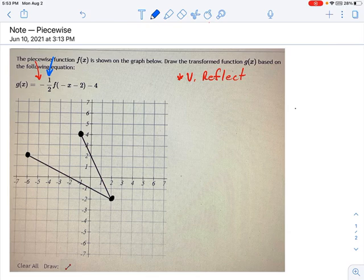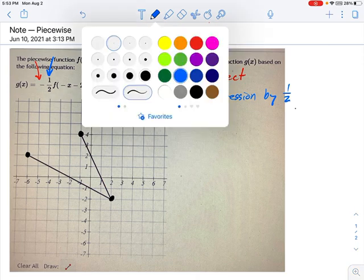We have a vertical compression because it's a factor of one-half. Vertical compression by one-half. If it were greater than one, it would be a stretch, but that's not what we got.